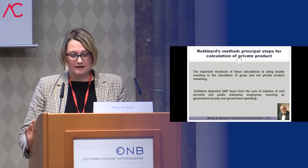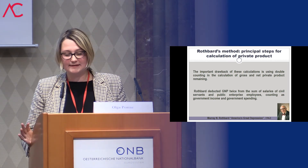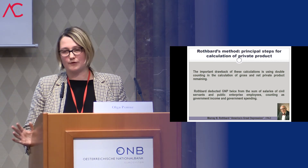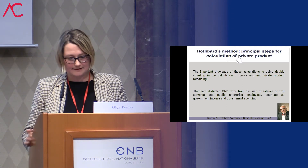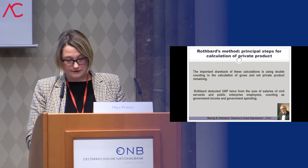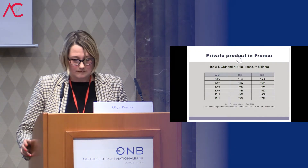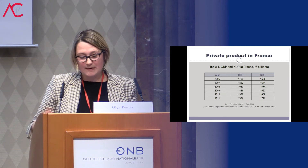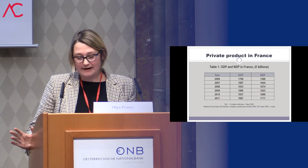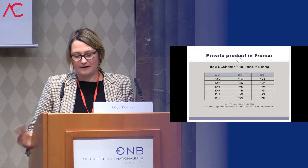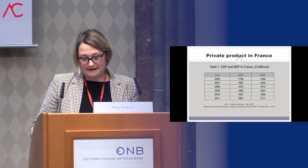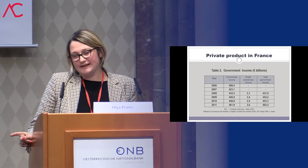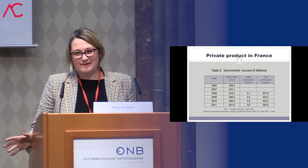We applied Rothbard's method to French macroeconomic data during the last crisis. First, we calculated gross private product and net private product remaining according to Rothbard's approach, and then we corrected the method and recalculated the indicator. We can observe that in 2009 GDP decreased. The estimation of government income is represented in Table 2, comprising staff salaries of government enterprises and the public sector. We also added to this figure the income produced by social security — which did not exist during the Great Depression in the United States — but which represents a significant figure today in France.